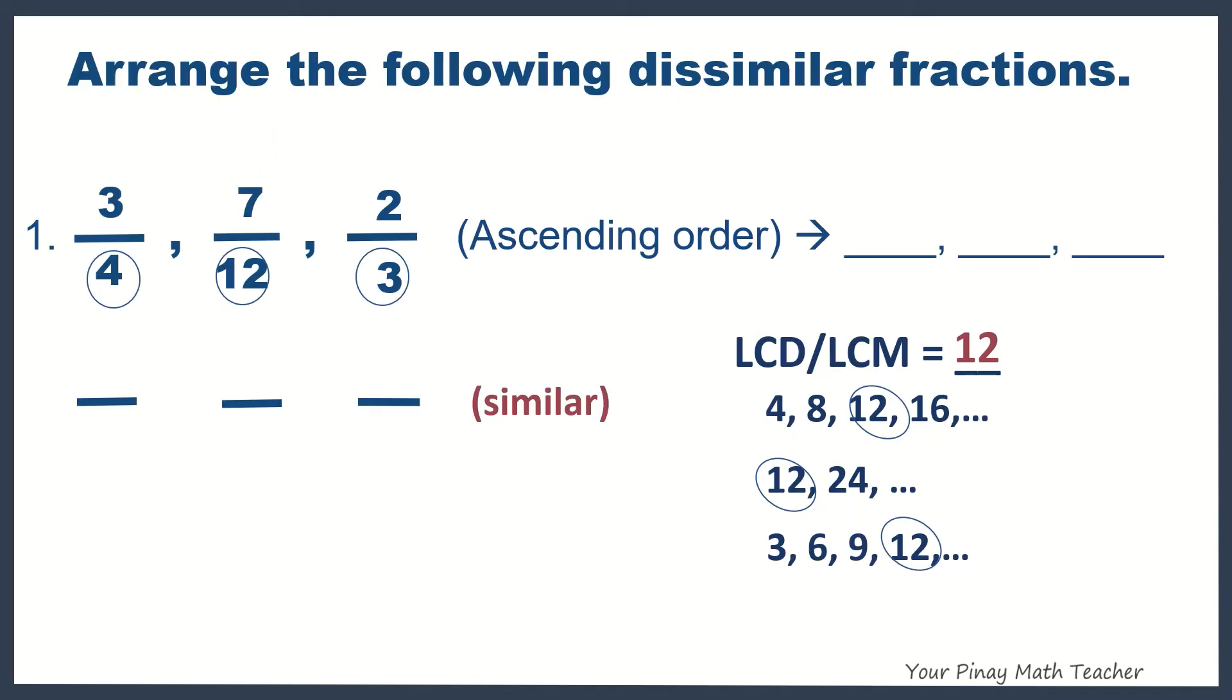12 is now our least common denominator. So, look at 3 fourths. What will you multiply to 4 to get 12? 3. Do the same in the numerator.